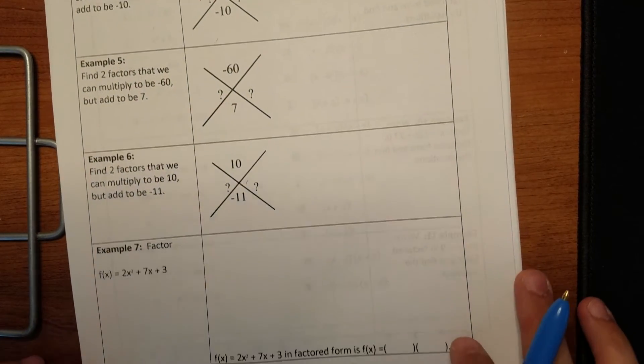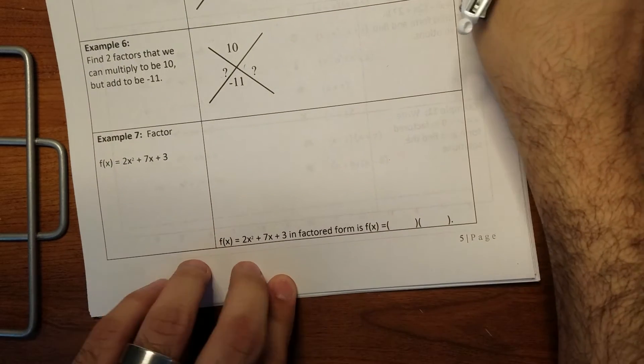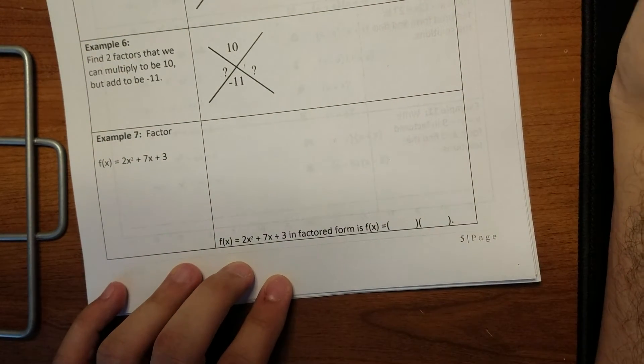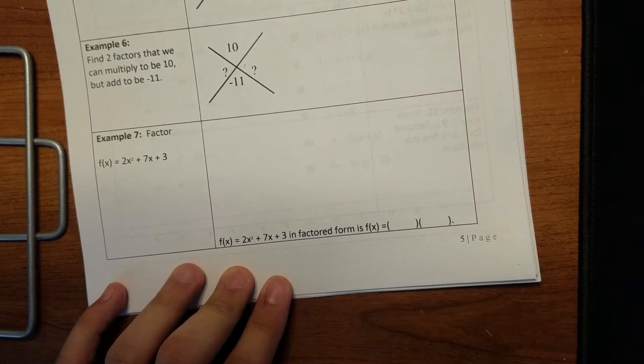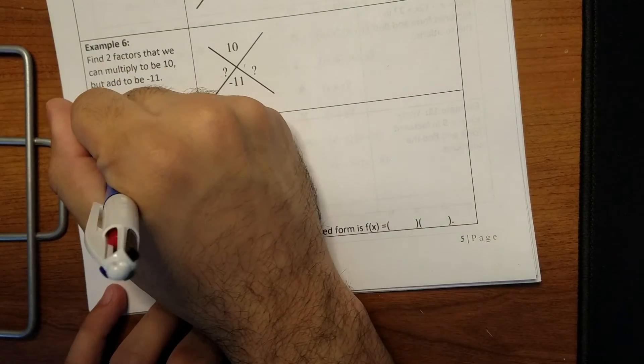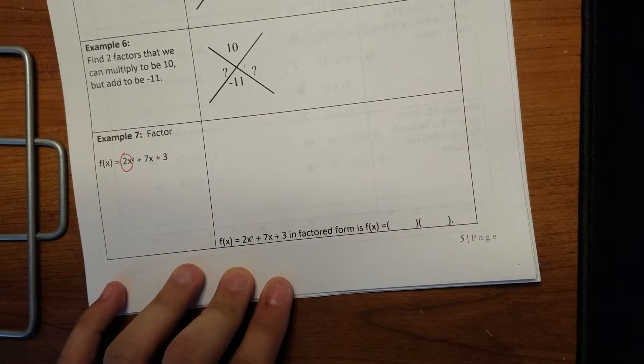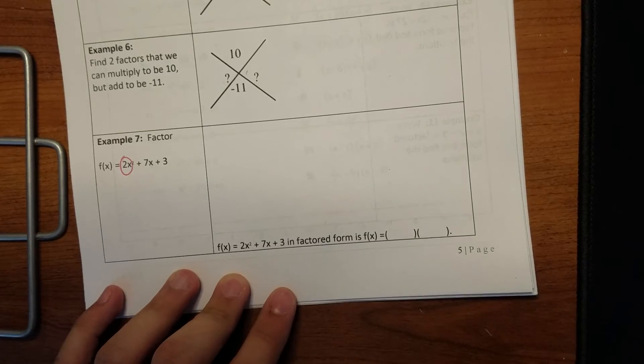Nothing difficult. If you look at example seven, it's the same thing we did for the mass packet. So you all know how to do this, except the only difference is we actually have a leading coefficient of two. So you're gonna do the entire Xbox method.